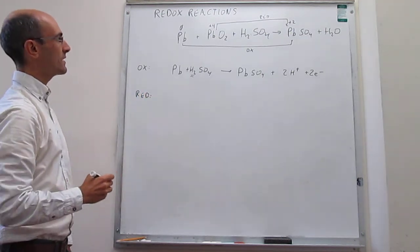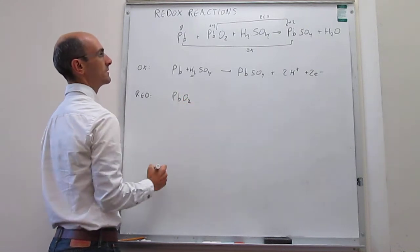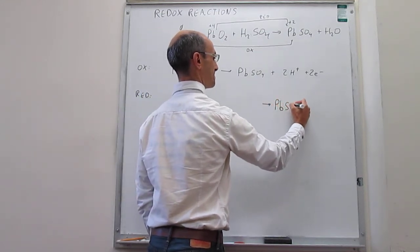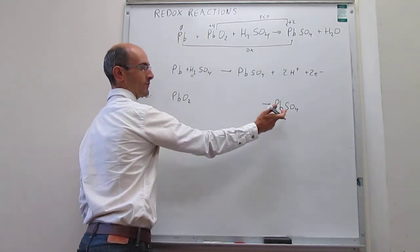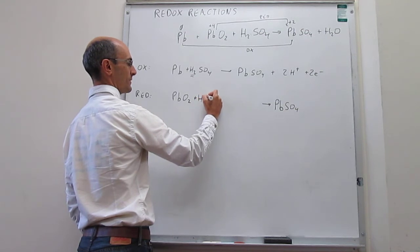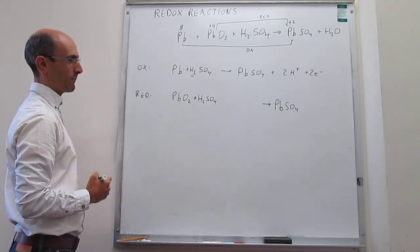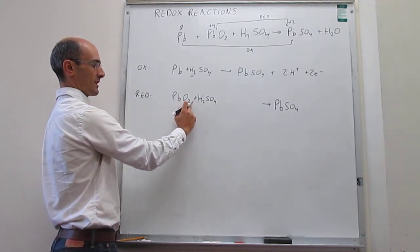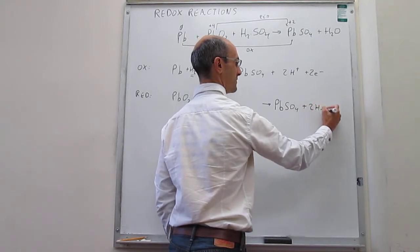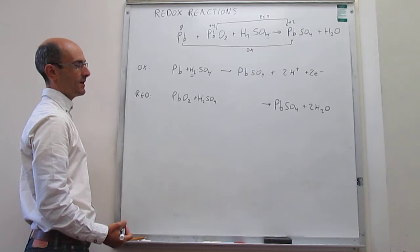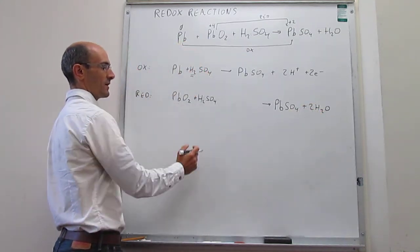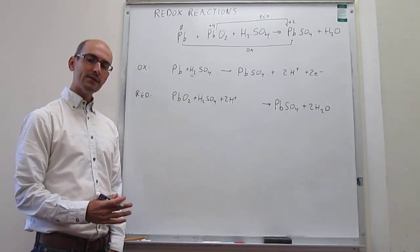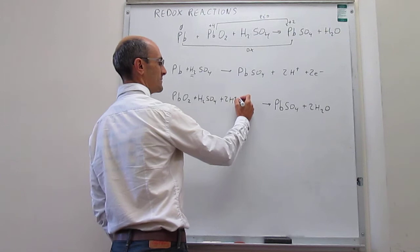The reduction half-reaction is lead 4 oxide going to generate lead 2 sulfate. In order to balance the sulfate, we need sulfuric acid as a reagent. The lead is balanced, sulfate is balanced, but oxygens are not — we have two oxygens, so we add two water molecules to balance the oxygens. That gives us four hydrogen atoms in products and two in reagents, so we add two protons. All atoms are now balanced.